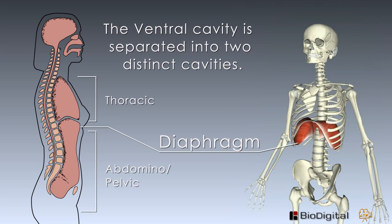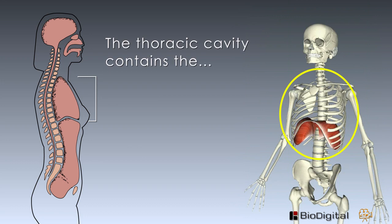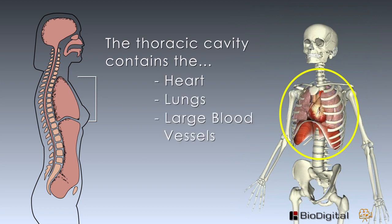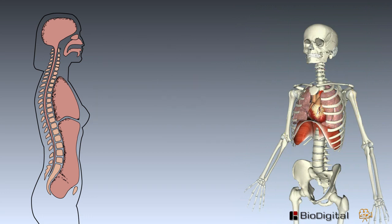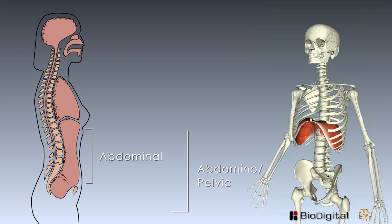The ventral cavities are larger than the dorsal. The ventral is separated into two distinct cavities by the dome-shaped muscle called the diaphragm. The cavity above the diaphragm is called the thoracic cavity, located in the chest area. It contains the heart, lungs, and the large blood vessels. Below the thoracic cavity and the diaphragm is what we call the abdominal pelvic cavity.